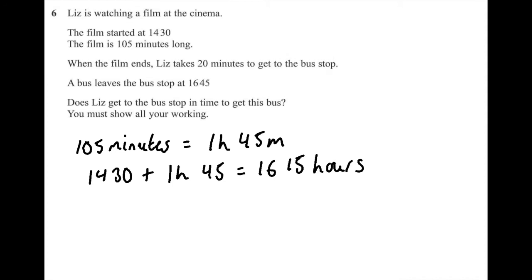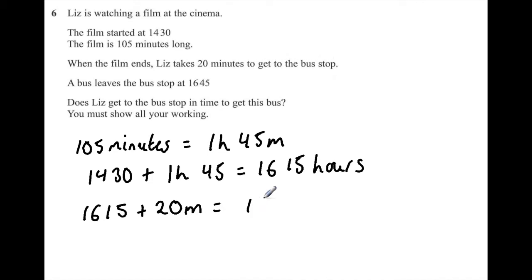When the film ends, Liz takes 20 minutes to get to the bus stop. So I'm going to add 20 minutes to 16:15 hours. 16:15 plus 20 minutes equals 16:35 hours. The bus leaves at 16:45 hours and she arrives at 16:35 hours, so she has 10 minutes to spare and does get there on time.